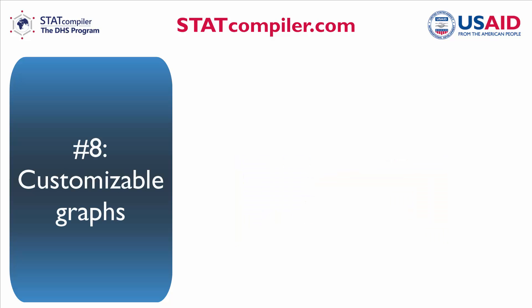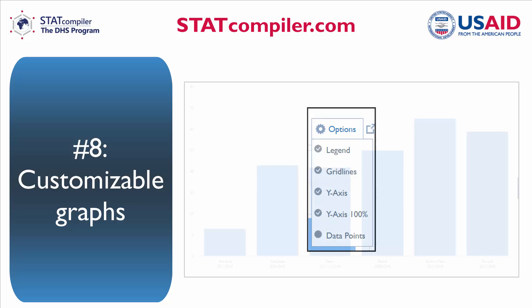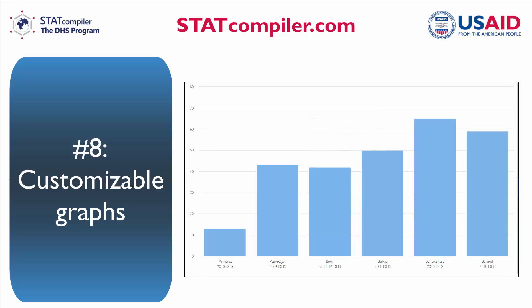Number 8. The new STATcompiler has more options to customize graphs, including choices about gridlines, the y-axis, legends, and data points.